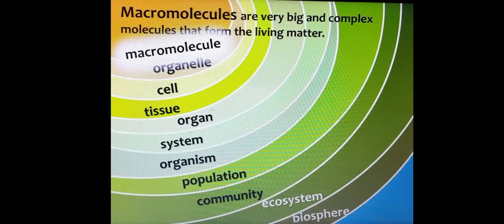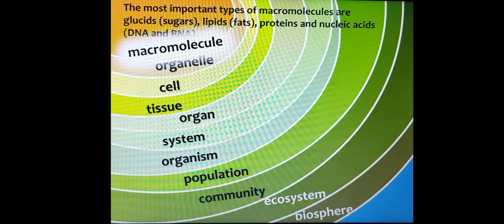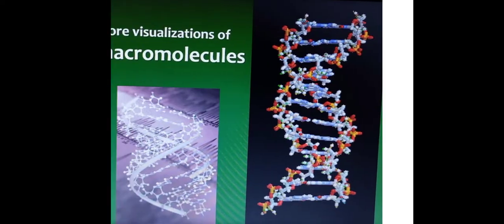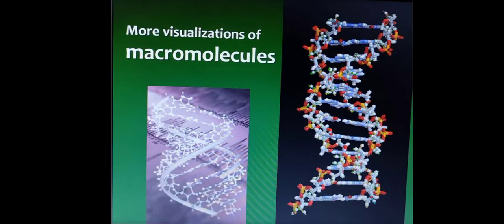Then comes macromolecule. These are large, complex molecules. Macro means big or large. They form all the living matter. Sugar, lipids, proteins, and nucleic acids are the four major macromolecules or big molecules. These are the pictures of sugar, lipids, and proteins. And this is DNA, a type of nucleic acid.